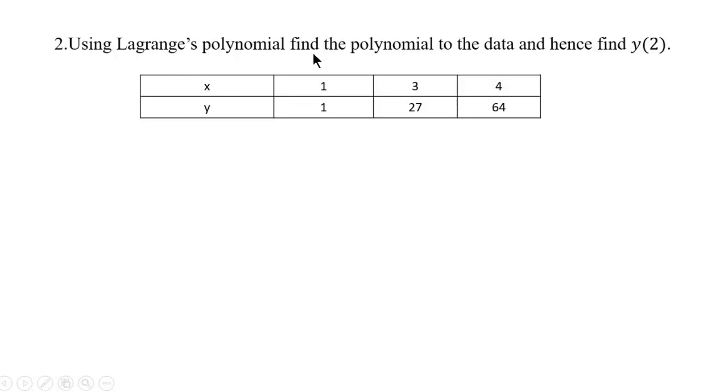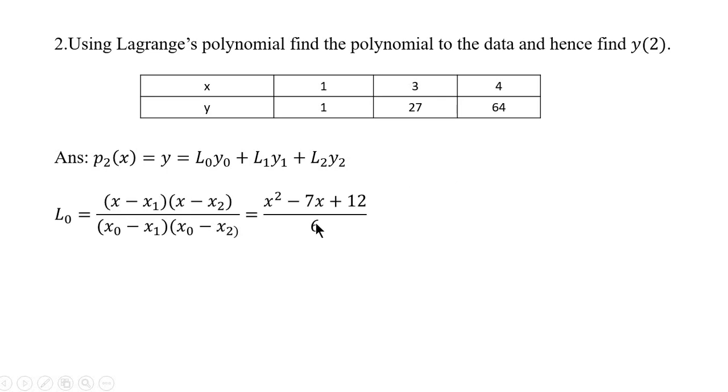Using Lagrange's polynomial, find the polynomial to the data and hence find y at 2. Here there are three points, that means we get a quadratic Lagrange. Here there are two questions. First we have to find the polynomial and then use that polynomial to obtain y at 2. This is the quadratic Lagrange where L0 is obtained using this formula. We do not know the value of x, so we get L0 in terms of x. Similarly, L1 in terms of x,